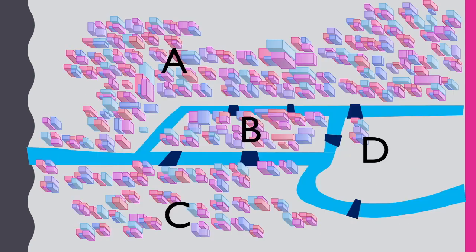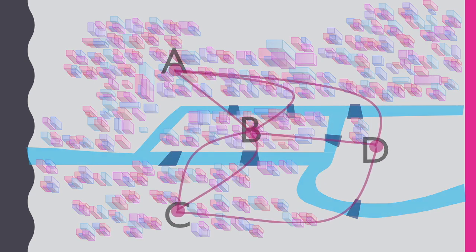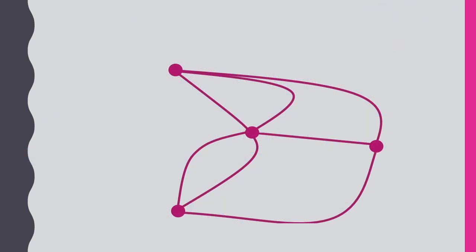For example, if we use a graph to represent the bridge problem, each edge represents a bridge, each node a landmass.